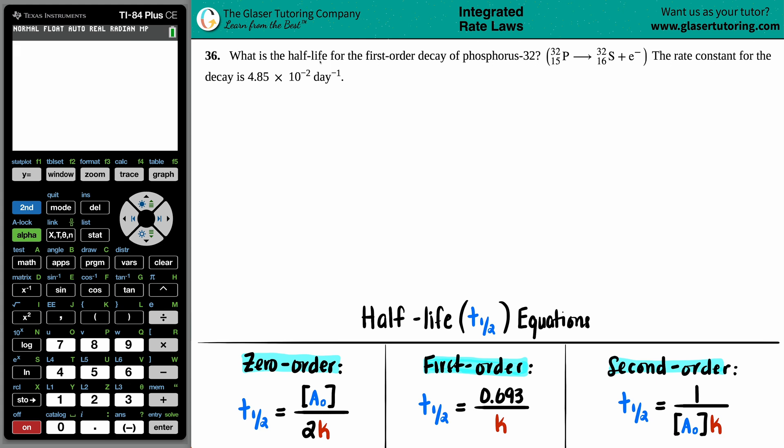Number 36. What is the half-life for the first order decay of phosphorus-32? They give us a nuclear reaction where we have phosphorus-32, atomic number 15, yields or breaks down into sulfur-32-16 with an electron. They did tell us that the rate constant for the decay is 4.85 times 10 to the negative second per day.